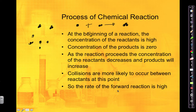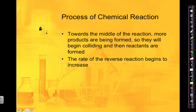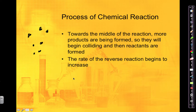The rate of the forward reaction — the rate at which I make products — is going to be very high because I've got a lot of reactants to react. Towards the middle of the reaction, you're going to have more products being formed, and they begin colliding with each other, and then reactants will actually be formed again. Those products will go in the reverse reaction and make more of your reactants, so the rate of the reverse reaction begins to increase towards the middle.